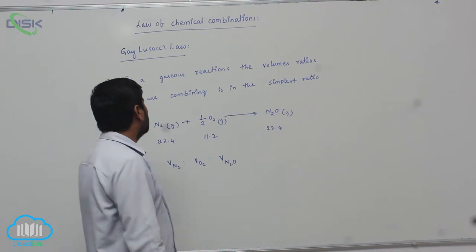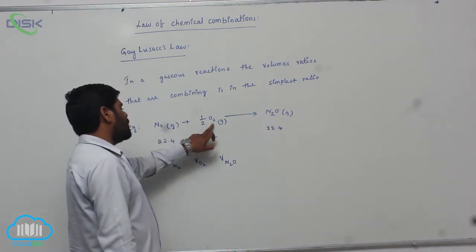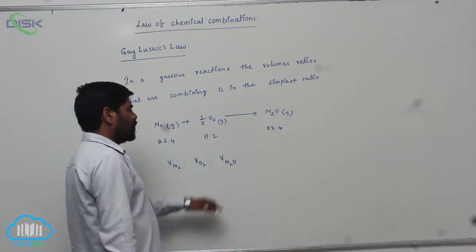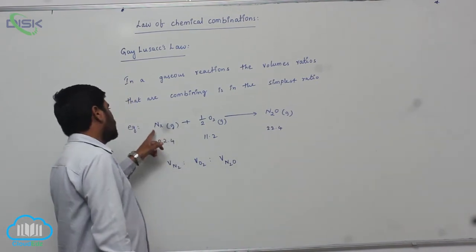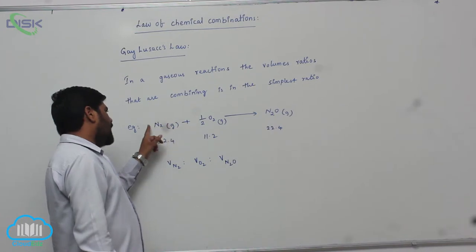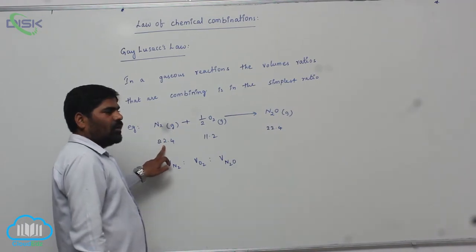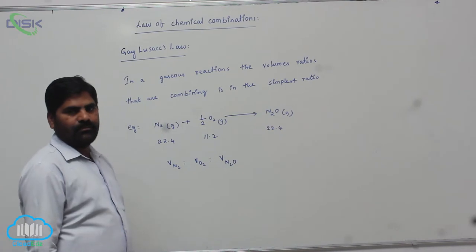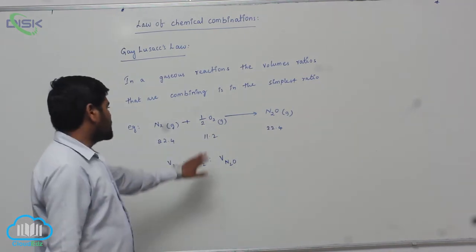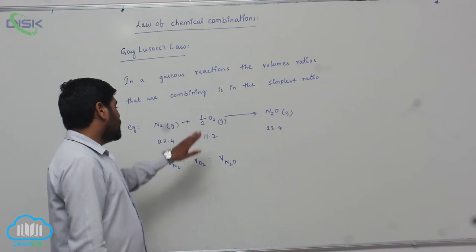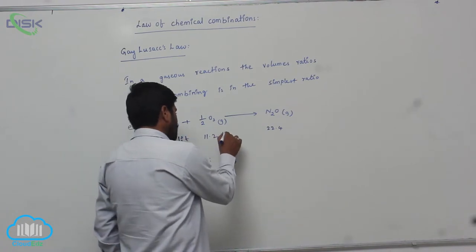For example, one mole of nitrogen gas combined with half mole of O2 gas to form nitrous oxide gas. At STP condition, one mole of this, 28 grams of nitrogen molecule, occupies 22.4 liters at STP. So 16 grams of oxygen atom occupies 11.2 liters.